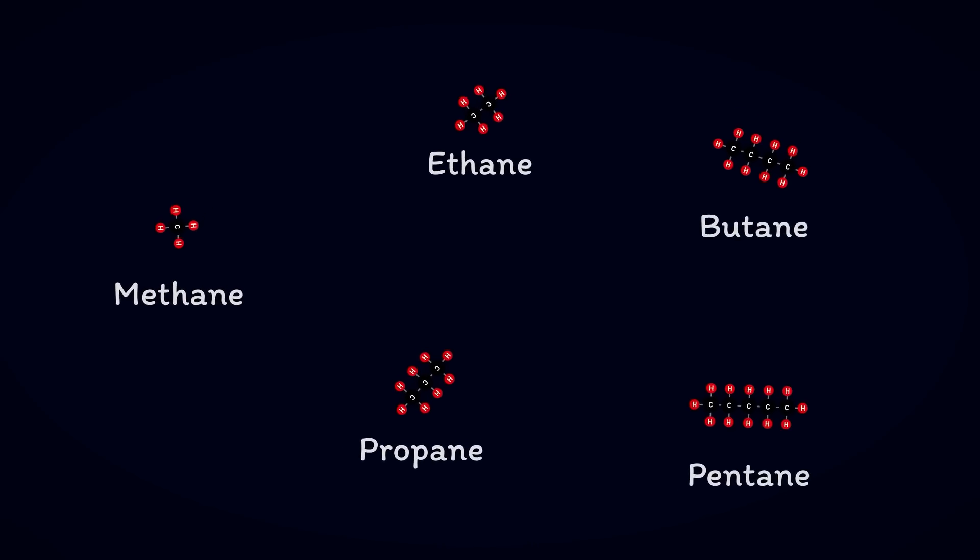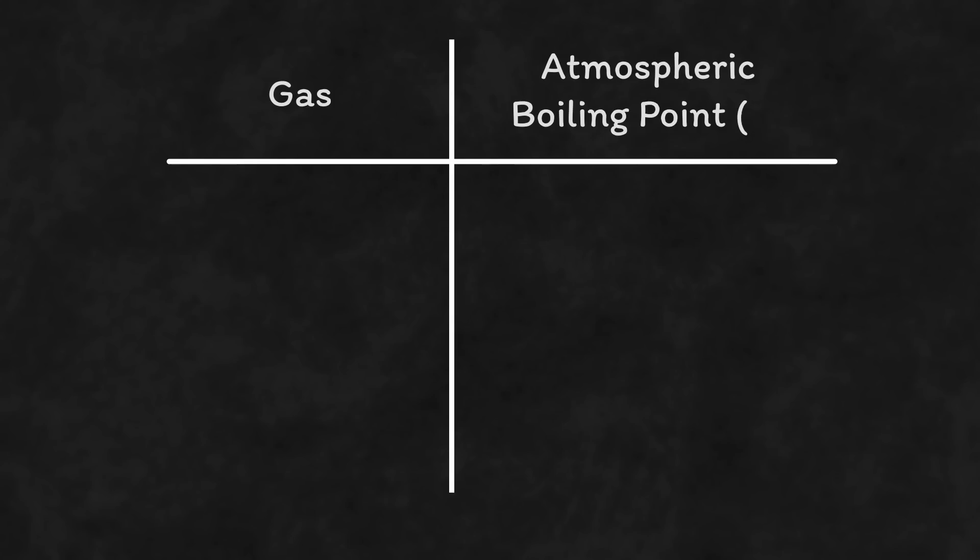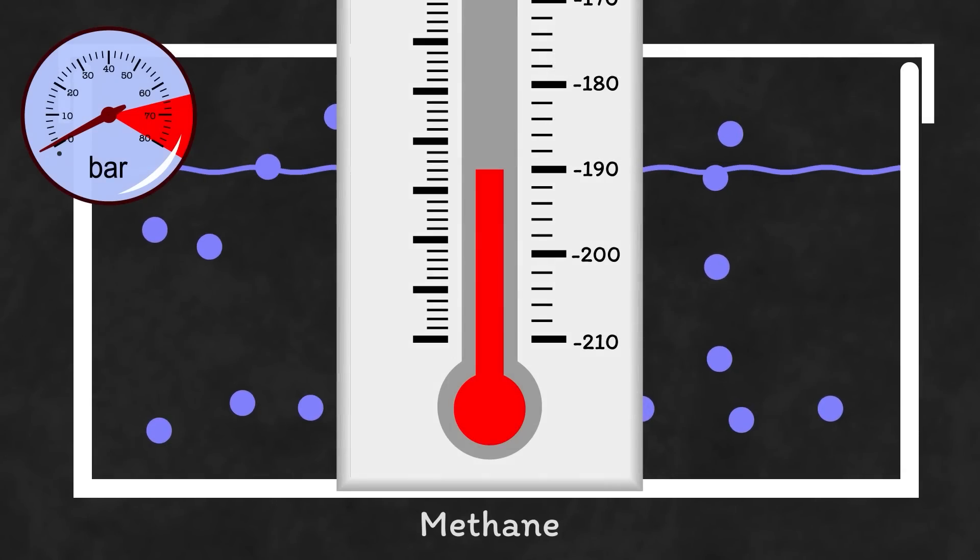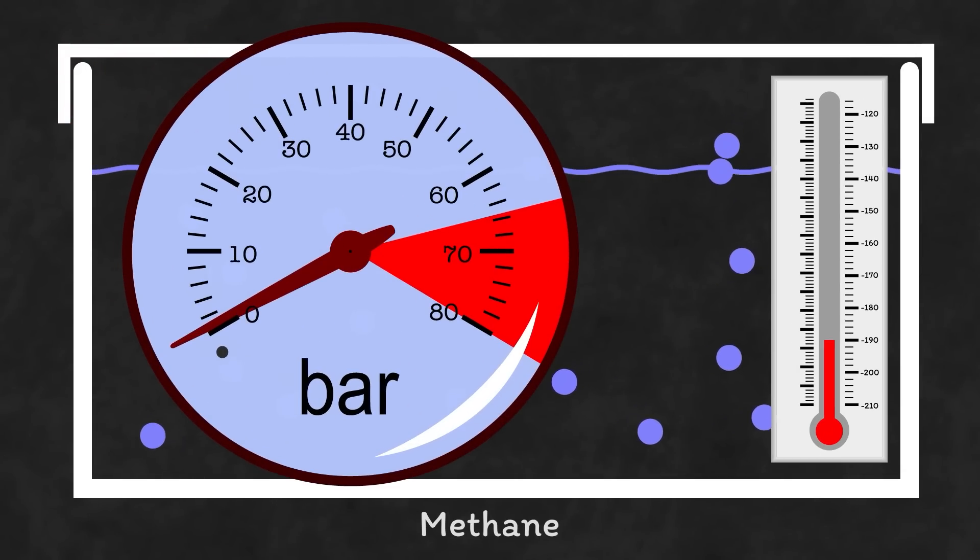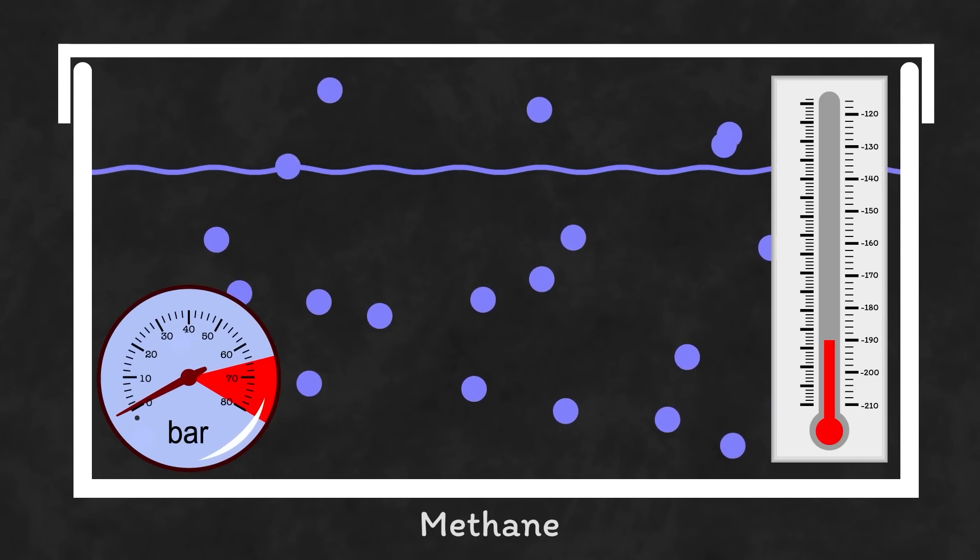For LNG or LPGs this happens at different temperatures for each product. Methane at minus 161 and a half degrees right the way through to butane at a practically tropical minus half a degree. If you keep the product below its atmospheric boiling point you can simply transport it in a sealed container so that the vapors don't escape and it will remain at atmospheric pressure meaning you don't need anything strong to hold it in.